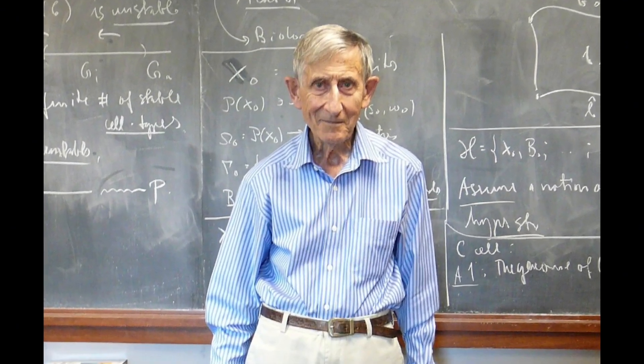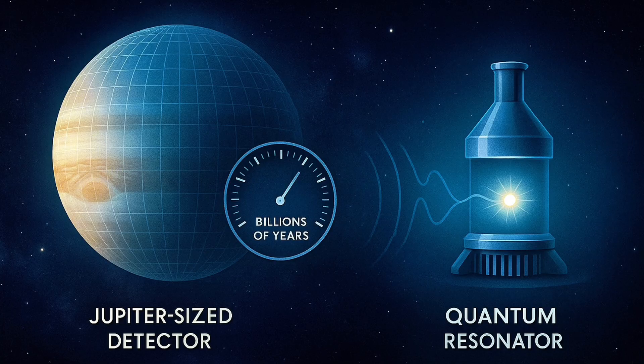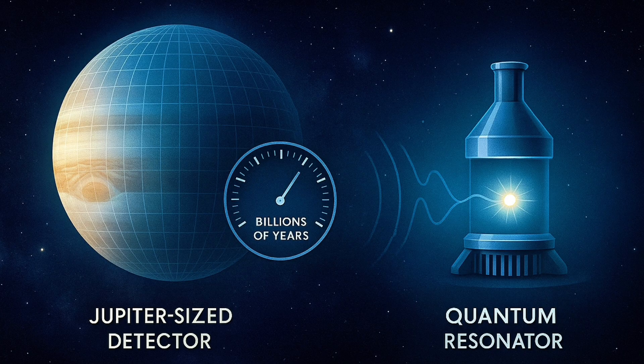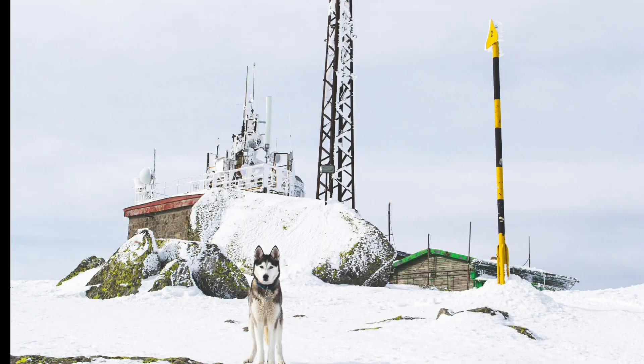Physicist Freeman Dyson estimated that even with a detector the size of Jupiter running for billions of years, we might never observe a single graviton event. That's how weak its interaction is. Still, new ideas offer more hope.